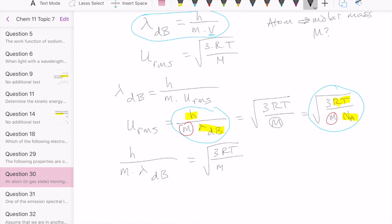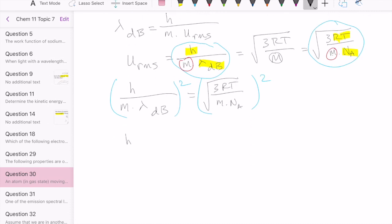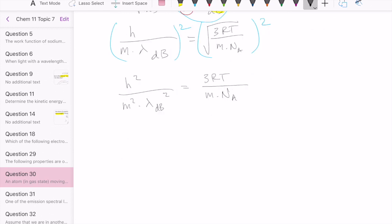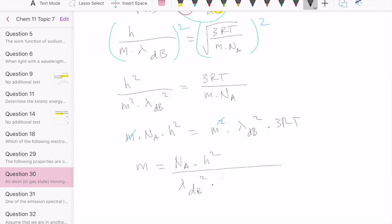3RT over M times NA. What I can do now is I can square both sides of this equation. And that would give me on the left side H squared over M squared times lambda de Broglie squared. And then that's equal to 3RT over M times NA. I can cross multiply. So it becomes M times NA times H squared equals to M squared times lambda db squared times 3RT. And remember what I want to do is isolate the M on one side. I have M squared on one and M on the other one that would cancel out. So that means that M should equal NA times H squared over lambda db squared times 3RT.